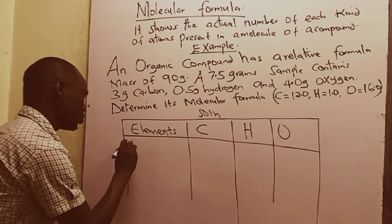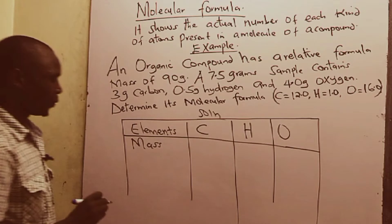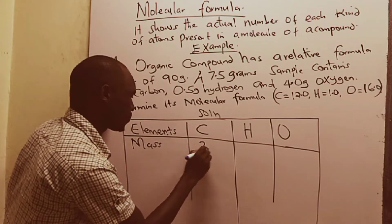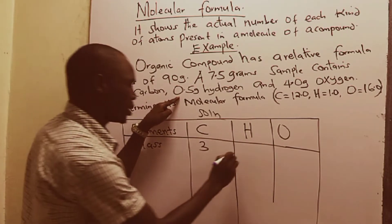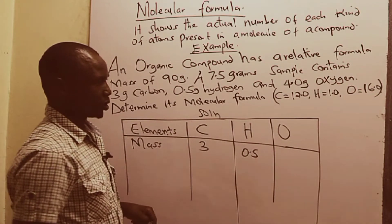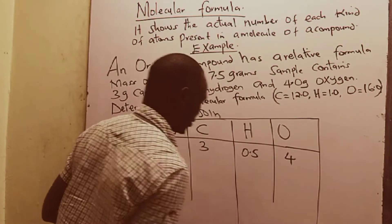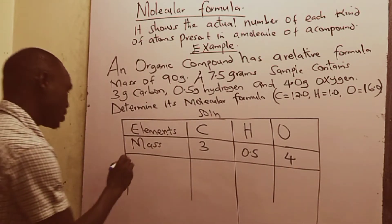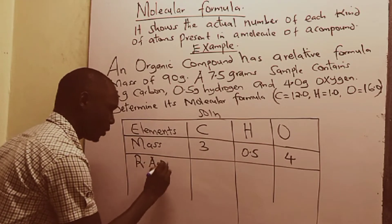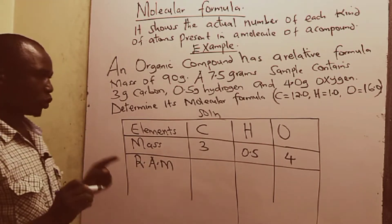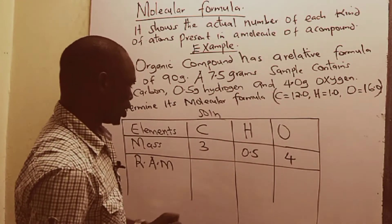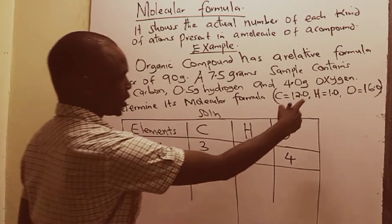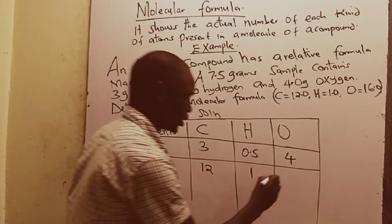Next you look at their mass — the composition in terms of their masses. We are told that carbon takes 3 grams, hydrogen 0.5 grams, and oxygen takes 4 grams. After the elements and the mass, we go to the relative atomic mass, which is usually given in brackets. The relative atomic mass of carbon is 12, that of hydrogen is 1, and that of oxygen is 16.